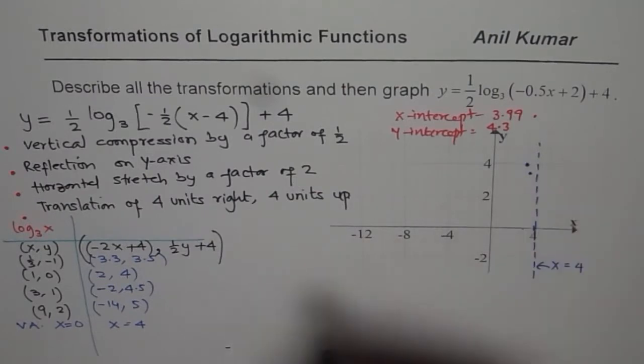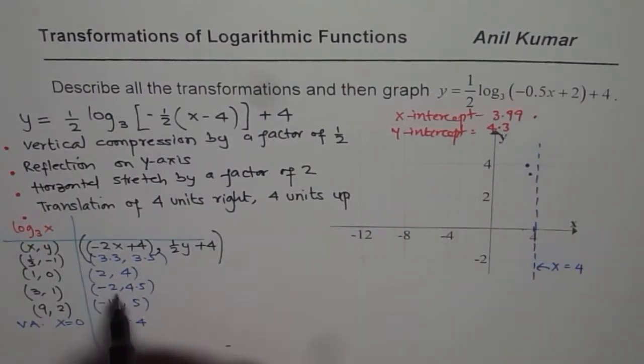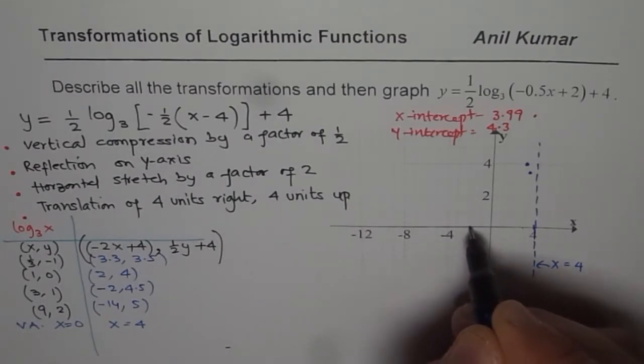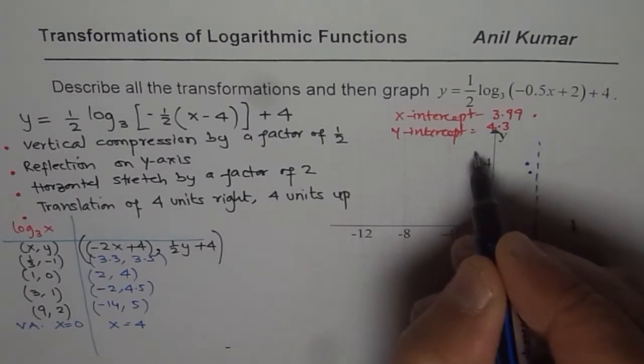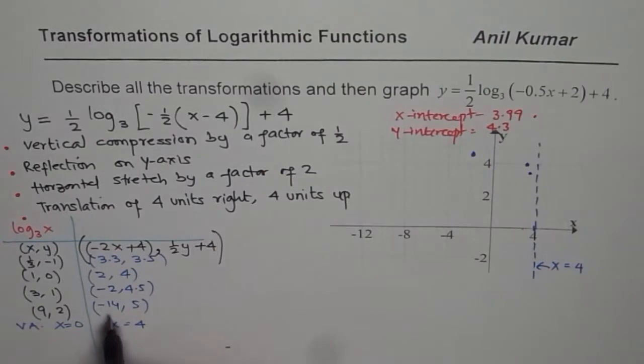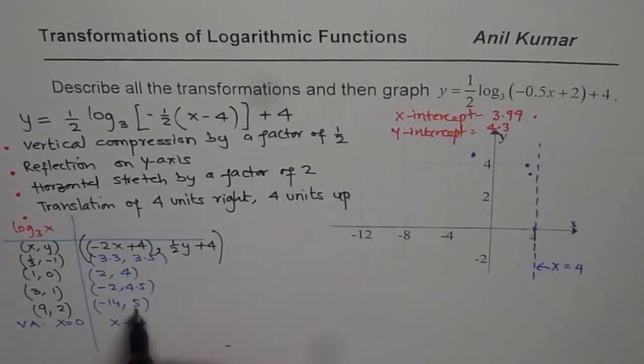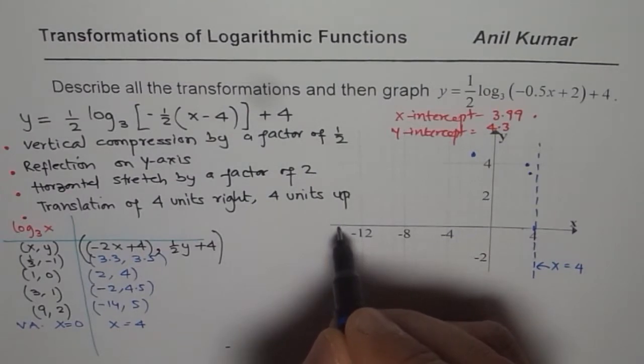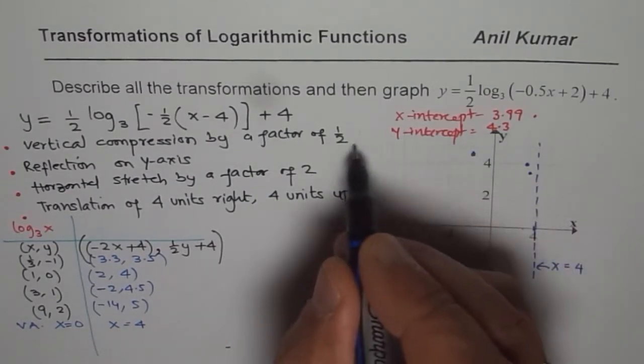Now at x equals to minus 2, 4.5. So this is 4, that is minus 2, 4.5 is kind of here. And at minus 14, we have 5. So 12, 13, 14, the value is 5. So 4 and 1, 5. So kind of here. So these are the points.